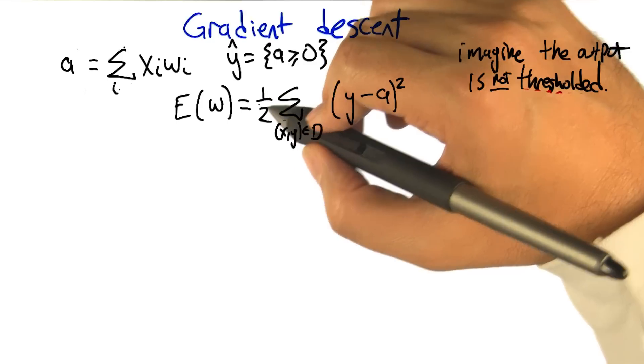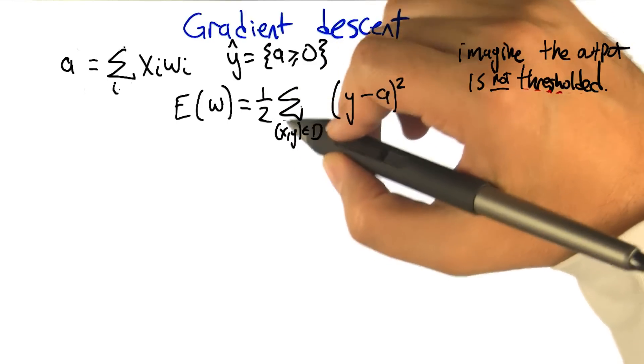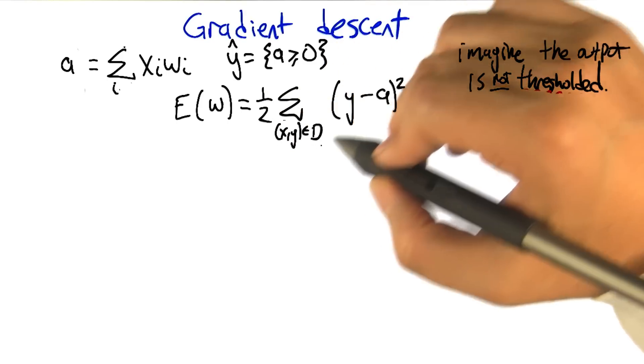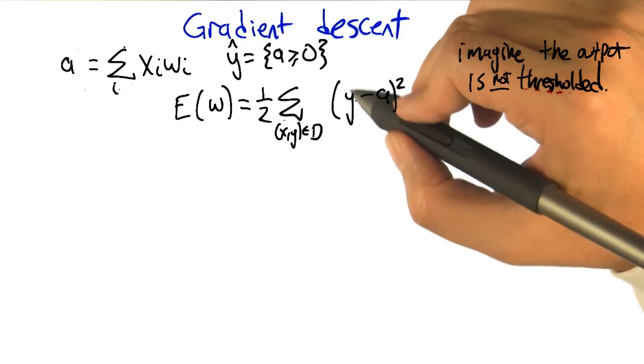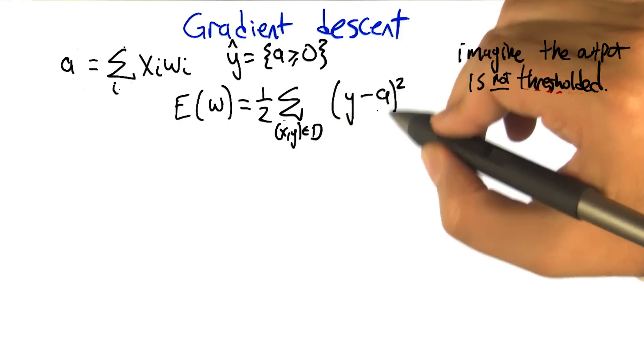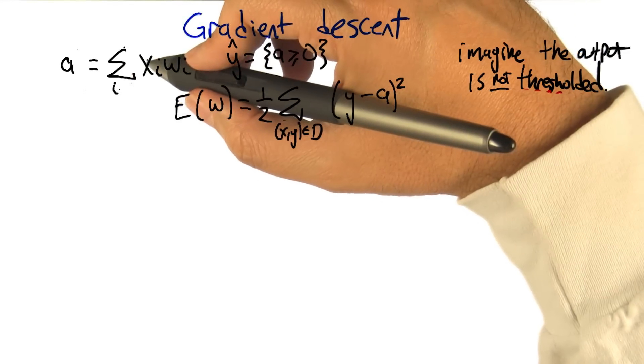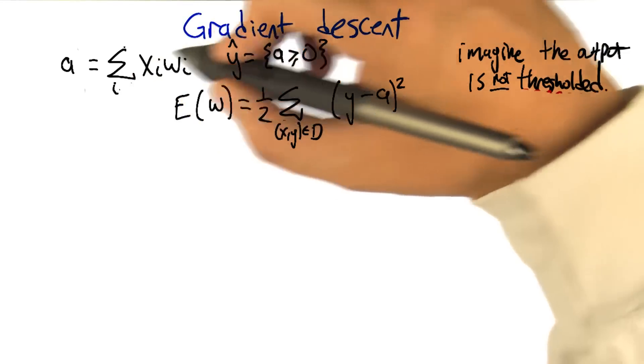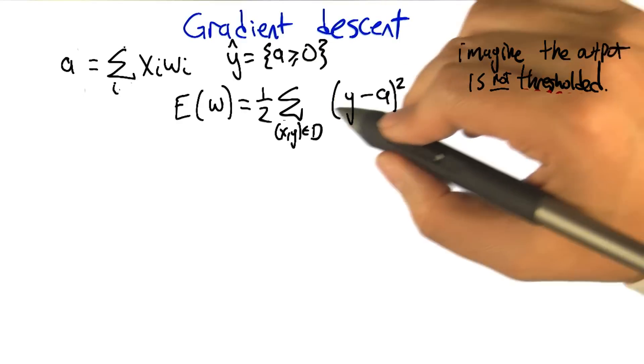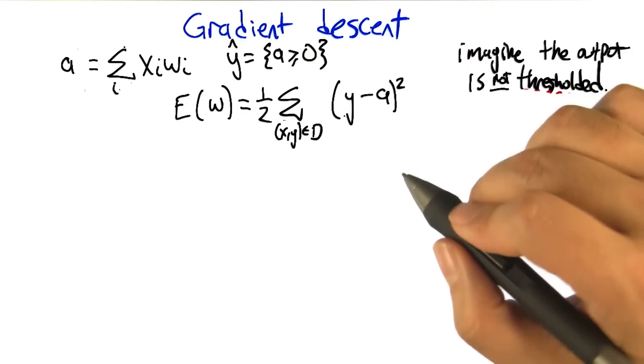And the form of that's going to be one half times the sum over all the data in the data set of what the target was supposed to be for that particular example minus what the activation actually was, right? The activation being the dot product between the weights and the input. And we're going to square that. We're going to square that error. And we want to try to now minimize that.